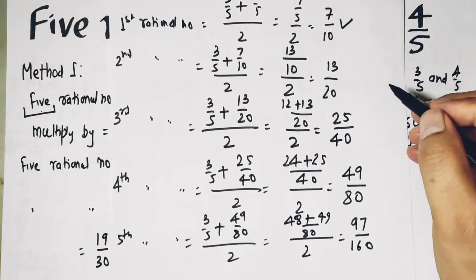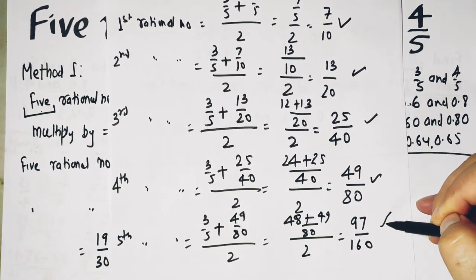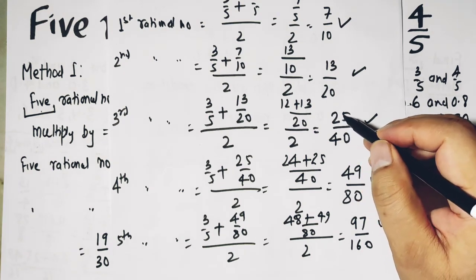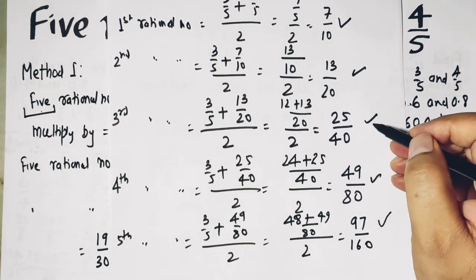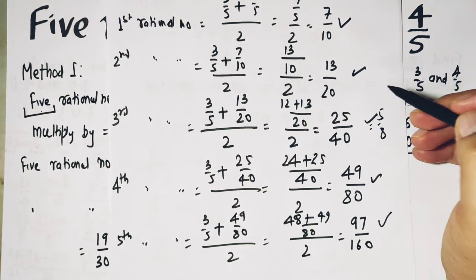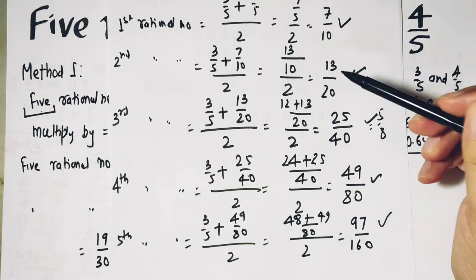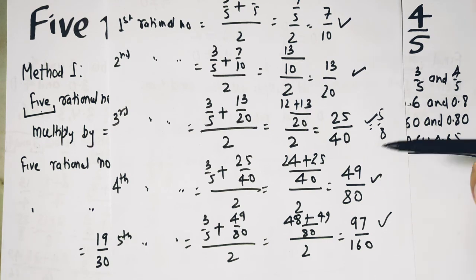And you can again see we can further simplify this. This will be like 5 upon 8. You can further simplify whatever you can. So these are the rational numbers between 3 upon 5 and 4 upon 5. I found rational numbers using different methods and all are correct. So I am sure you must have learned something from this video. Subscribe to the channel and I will catch you in the next video. Take care.